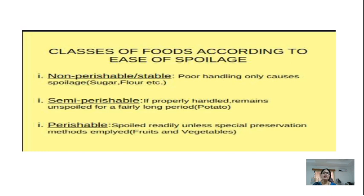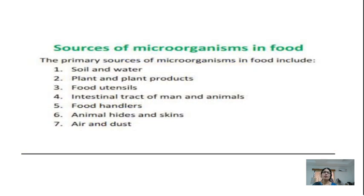The second is semi-perishable food, for example potatoes. Potatoes are vegetables which we can store for a large period of time, and they remain unspoiled if they are properly handled. The third is perishable food, like fruits and vegetables. These are foods which readily get spoiled, so they have to be stored in a very proper way.